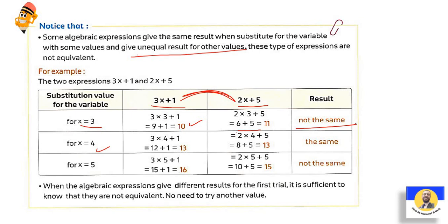Sometimes when you check a certain value, both expressions might give 13 — they look the same — and you might think they're equivalent. But as long as even one substitution gives a different result, they are definitely not equivalent. The point is: sometimes substituting one number might give the same answer by coincidence, so always check with multiple values. Since these expressions give different results, they are not equivalent.